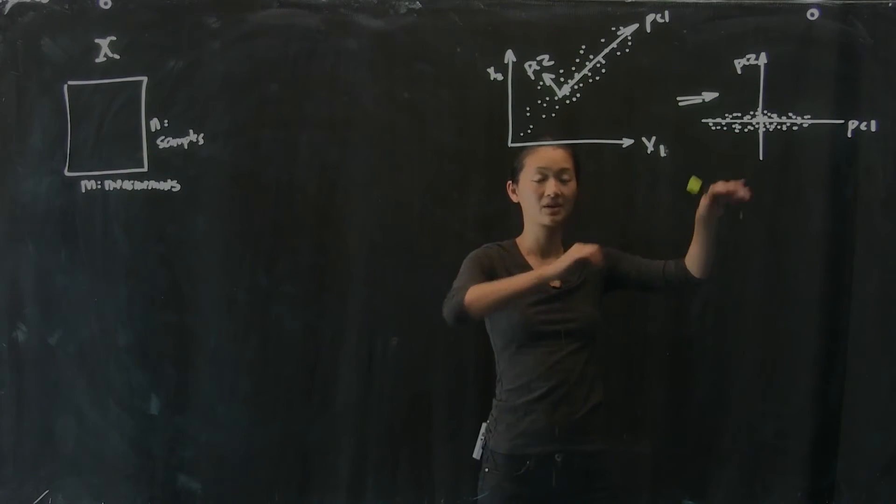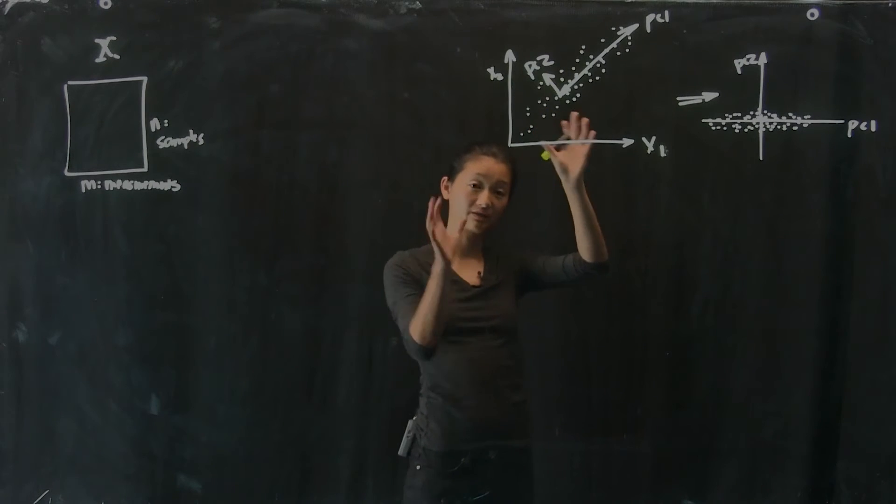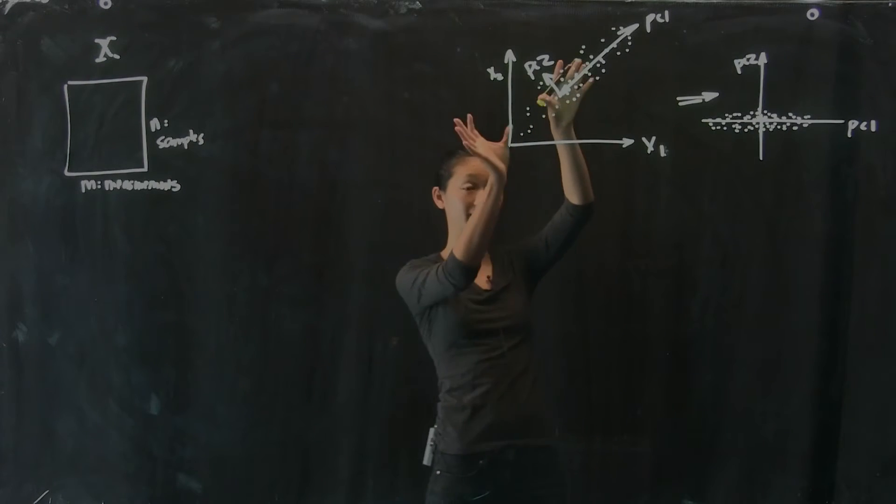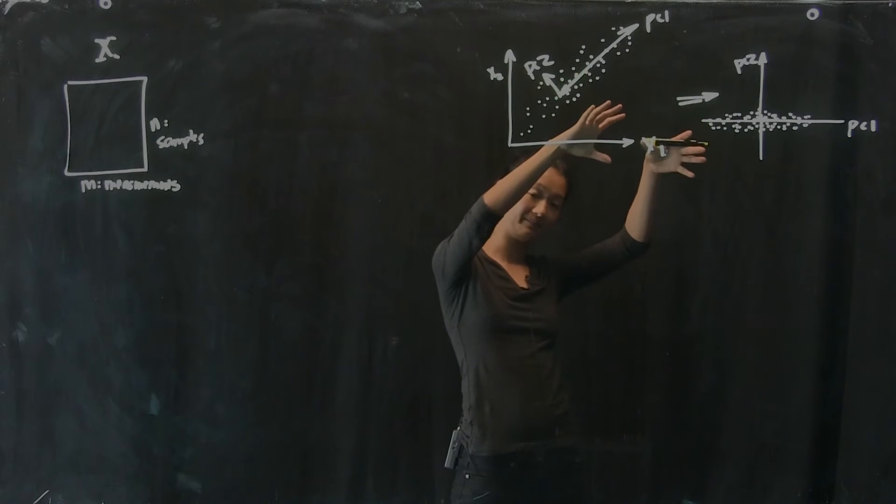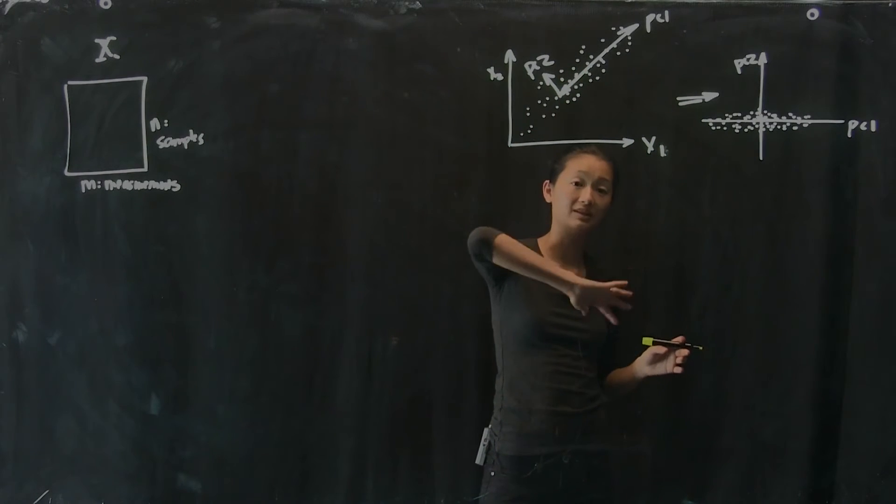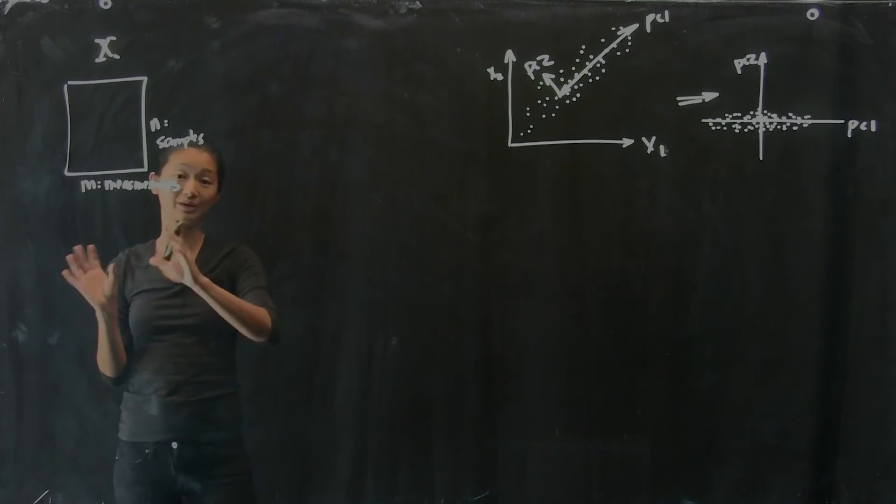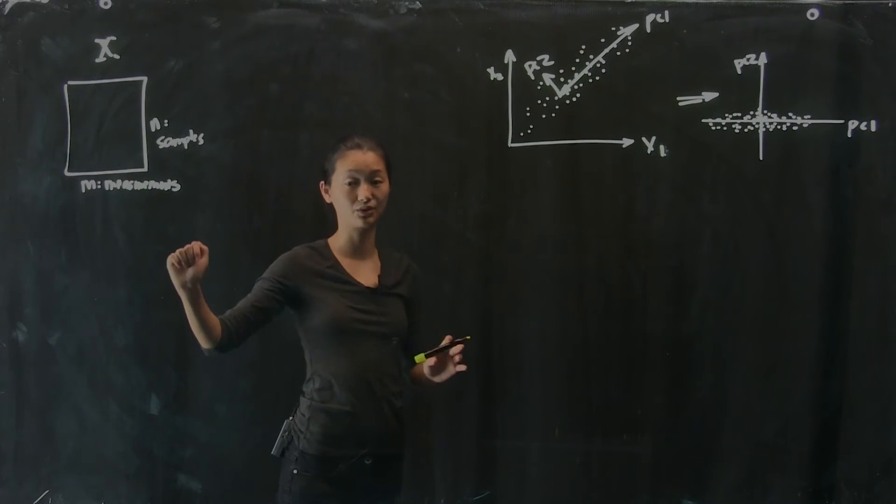Exactly the same data. So what the PCA components are doing is this transformation. In this particular case, I've literally taken the data and rotated it. Now, because this is two-dimensional data, this is relatively easy to do.